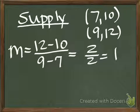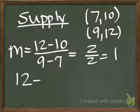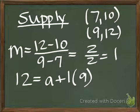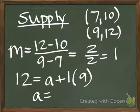Taking one point from our supply curve, we can find our y-intercept. I'm going to use (12, 9). So, we have 12 equals A plus 1 times 9. And we would find that in this case for our supply curve, the y-intercept is 3.